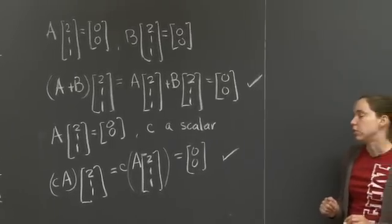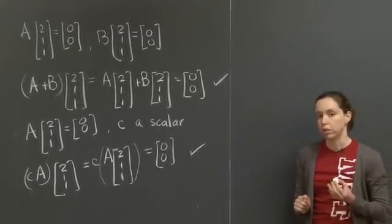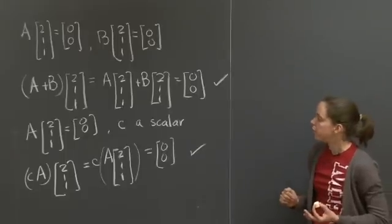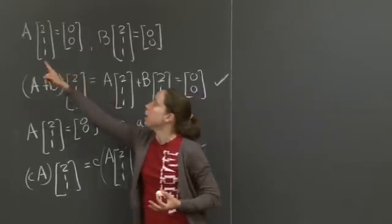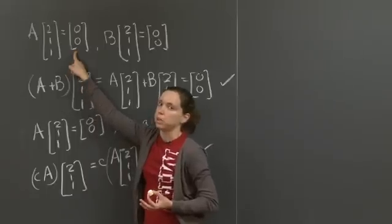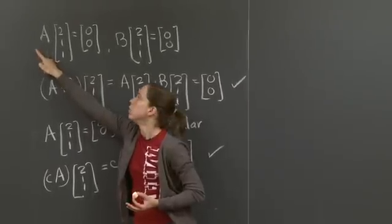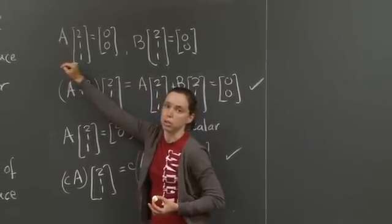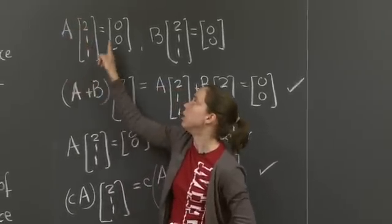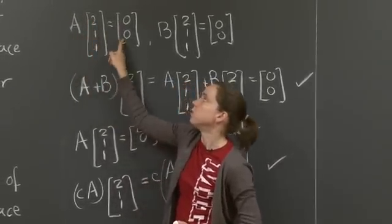Well, so the condition for a matrix to be in this subspace is that the vector 2, 1, 1 is in the null space. So I must have A times 2, 1, 1 is equal to 0, 0. So what is happening? Well, A is a 2 by 3 matrix. So you can actually think about what happens on each row separately. You will have the first row of A times 2, 1, 1 is equal to 0. And the second row of A times 2, 1, 1 is equal to 0. So let's see what that means.